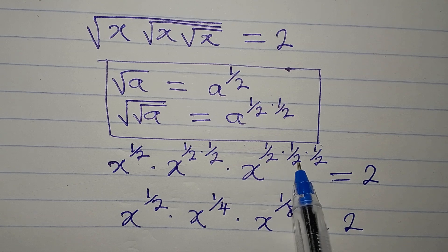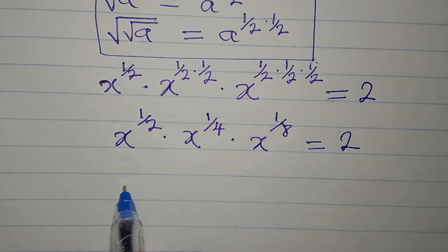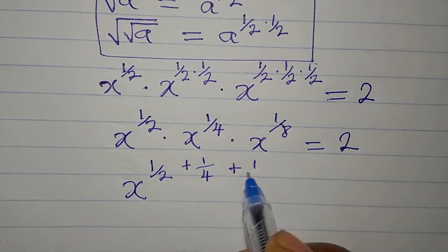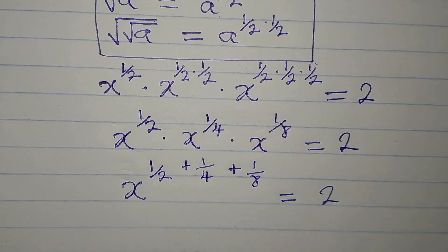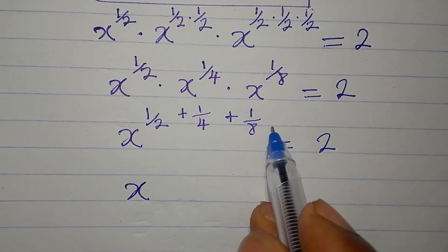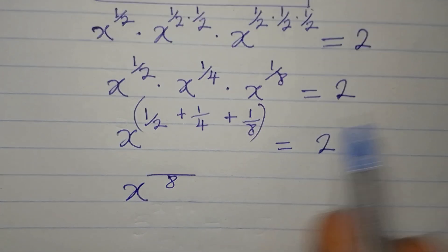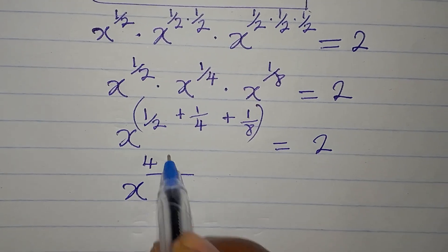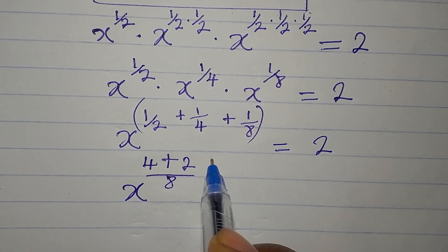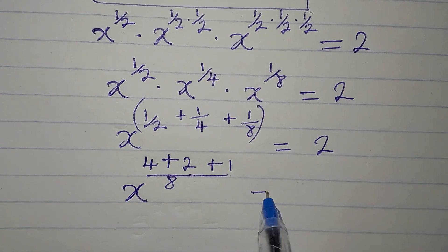We now have x to the power of 1 over 2, multiplied by x to the power of 1 over 4, multiplied by x to the power of 1 over 8, all equal to 2. Since the bases are the same and we are multiplying, we add the powers: 1 over 2 plus 1 over 4 plus 1 over 8. The LCD of the powers is 8. So: 8 divided by 2 is 4, times 1 is 4; plus 8 divided by 4 is 2, times 1 is 2; plus 8 divided by 8 is 1, times 1 is 1. The numerator is 4 plus 2 plus 1 equals 7, giving 7 over 8.